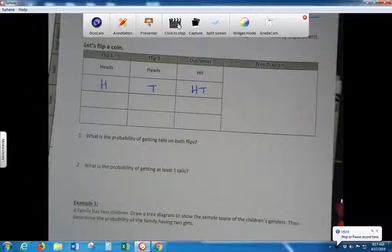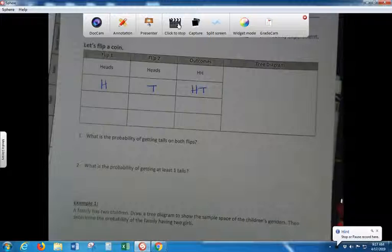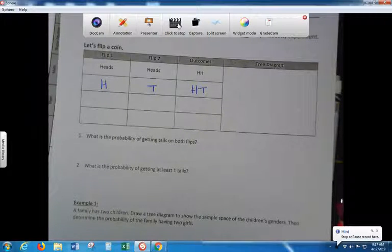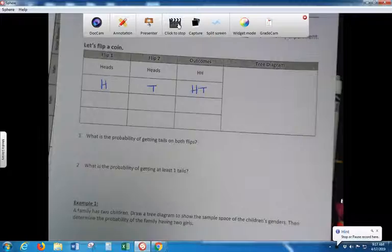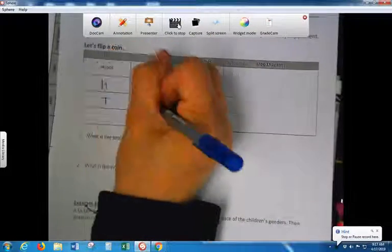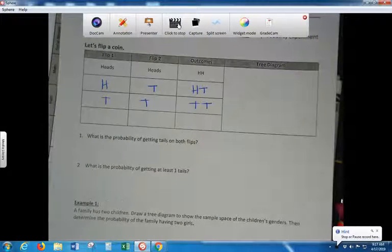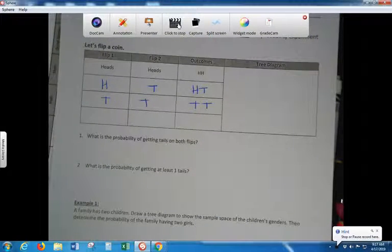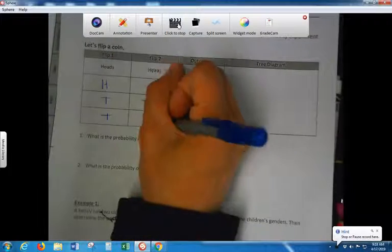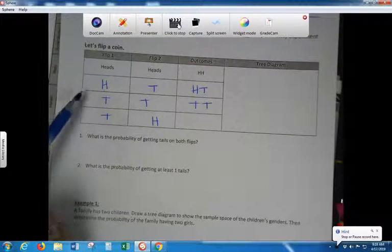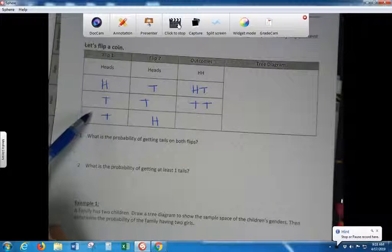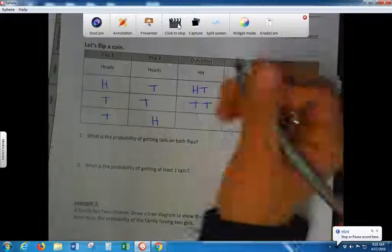Now, what is another option? Tails, tails. And the last option, who can figure out the last option? Tails and tails. Very good. Because the order matters, right? We already have a heads, tails. Yeah, but this one, the order is different. First came tails, then came heads. So, tail, heads.